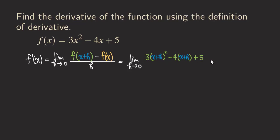That's not finished with the numerator, because we still have the minus f of x that we need to put down. So we have minus, and we have three x squared minus four x plus five. There was a minus sign in front of this function, and so when we start writing out the function with more than one term, we actually need to put a pair of parentheses so that we distribute this negative one to all the terms inside the parentheses.